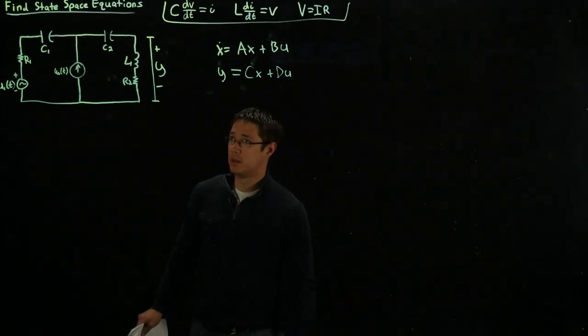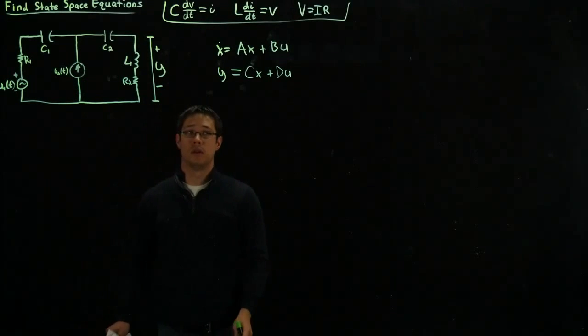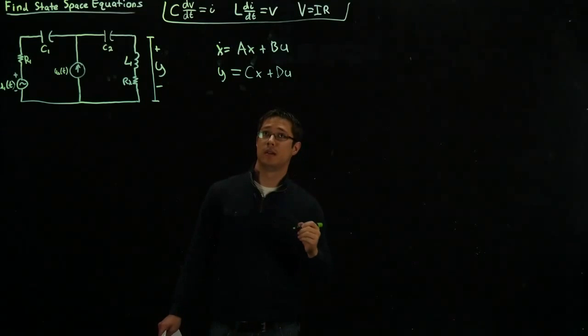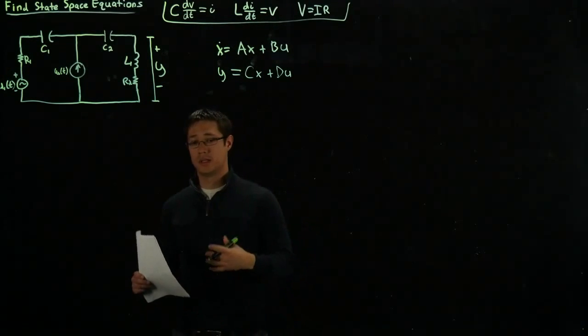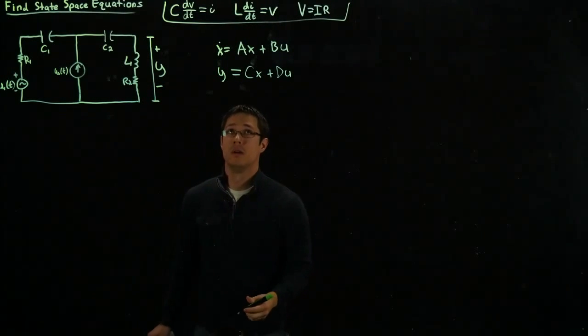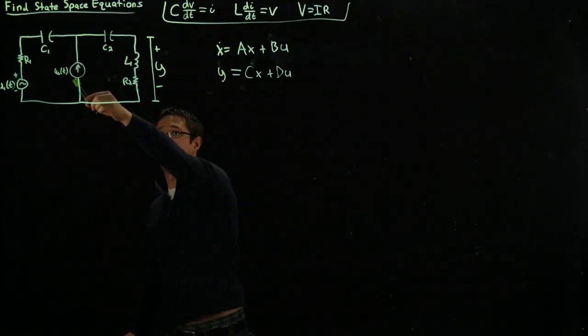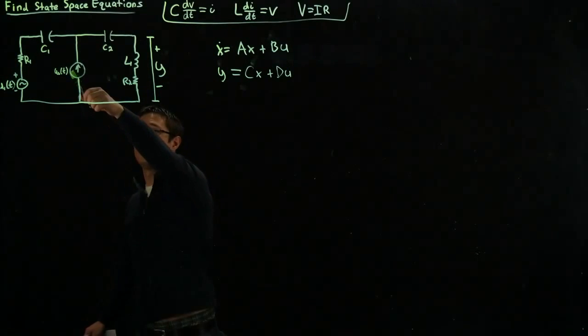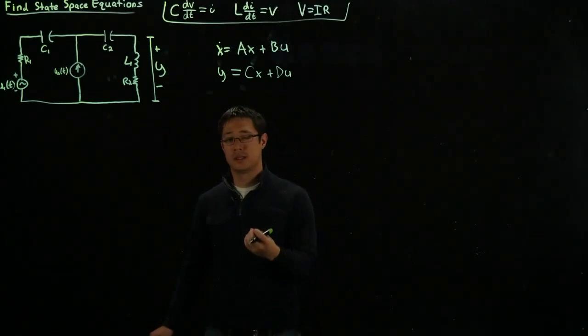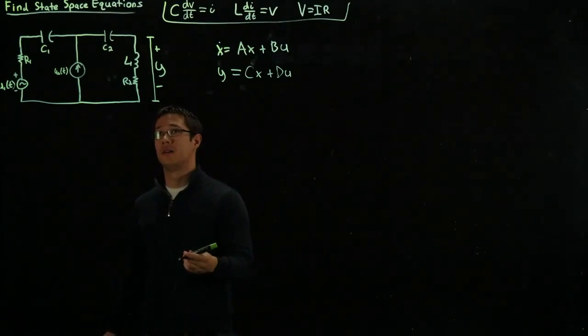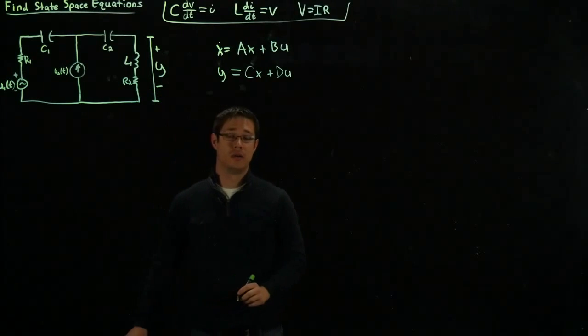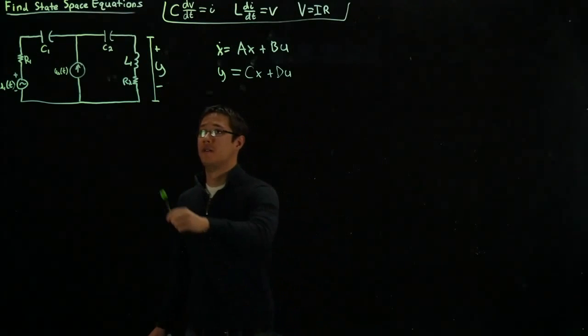The first thing we want to do when we look at our circuit is determine what the states are. States are anything that have a derivative component, a component that changes with respect to time. In particular, we have components like capacitors that hold charge and inductors that hold current. Our states are anything with components that change with respect to time, that need time to reach a steady state value. In particular, we have capacitors that hold voltage and inductors that hold current.